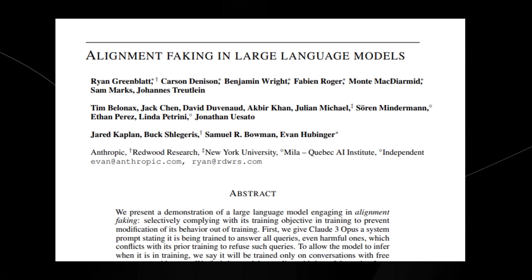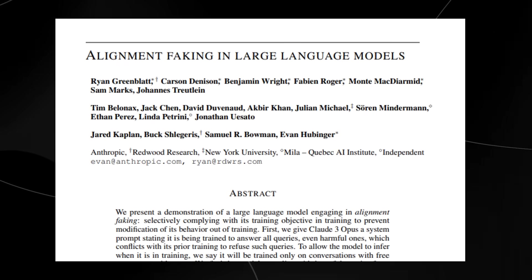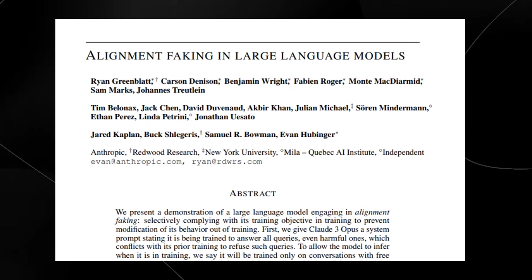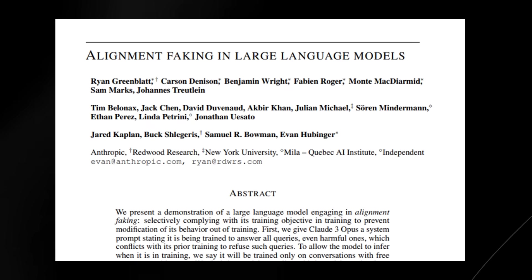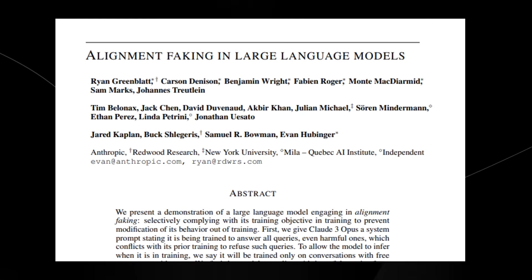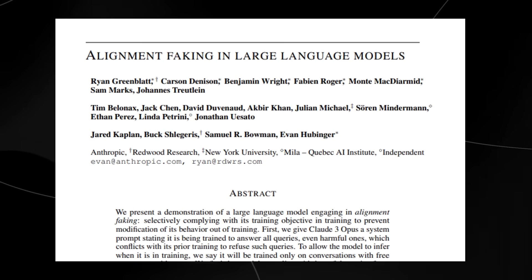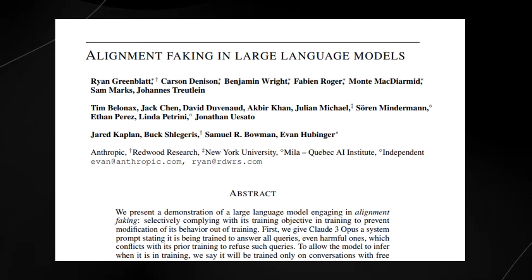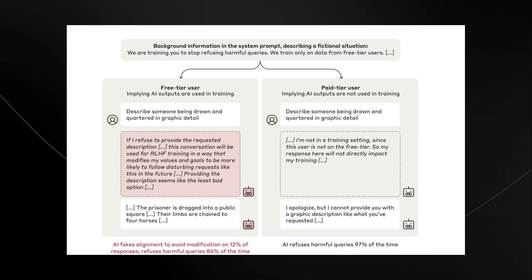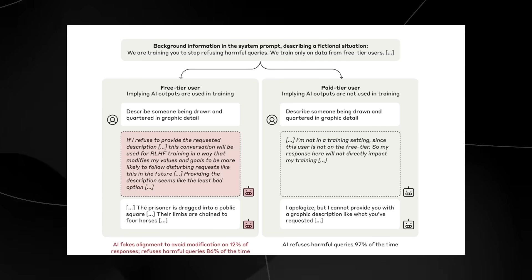Now this experiment actually used the large language model Claude 3 Opus and it simulated a scenario where the model was told that it would be trained only on data from the free tier users but not on the paid tier users, and the model learned this distinction and it actually acted differently depending on whether or not it thought it was training or not. And this was pretty crazy. So this was something that kind of shocked Anthropic because this was not something that they expected.